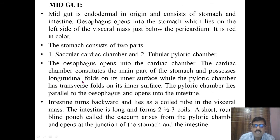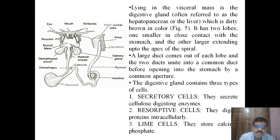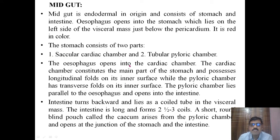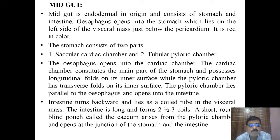The stomach can be divided into two parts: the saccular cardiac chamber and the tubular pyloric chamber. The esophagus opens into the cardiac chamber, which constitutes the main part of the stomach and possesses longitudinal folds on its inner surface. The pyloric chamber has transverse folds on its inner surface. The pyloric chamber lies parallel to the esophagus and opens into the intestine.